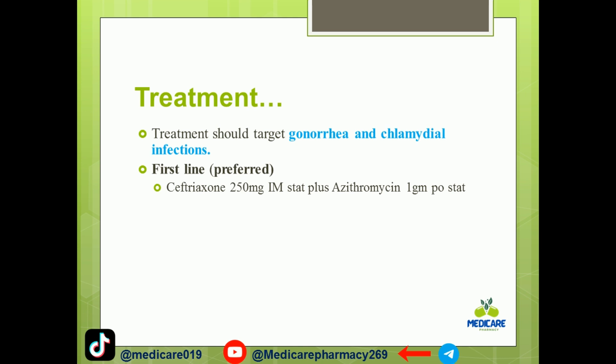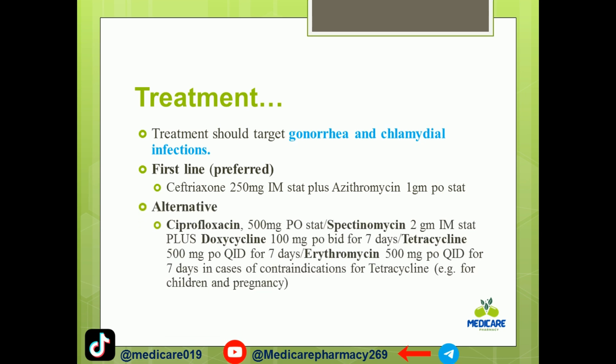The first-line treatment is ceftriaxone 250 mg plus azithromycin 1 gram. Alternatively, doxycycline can be used for 5 to 7 days, or tetracycline for seven days. In cases of contraindications to tetracycline, such as in children or pregnancy, erythromycin 500 milligrams can be used for seven days.